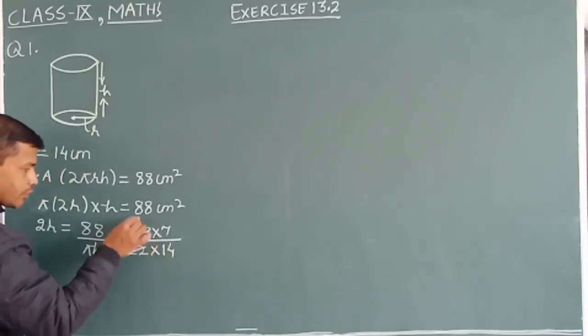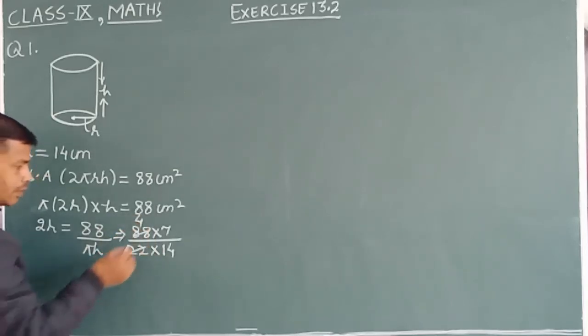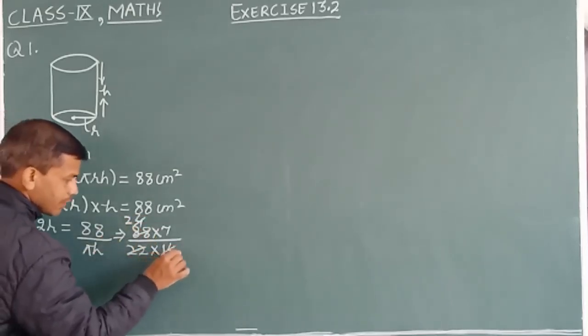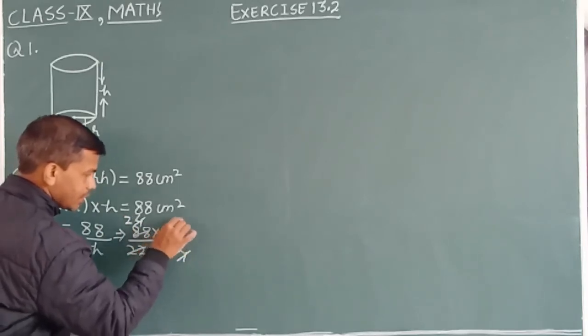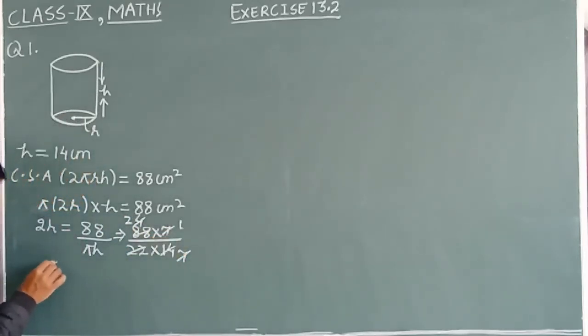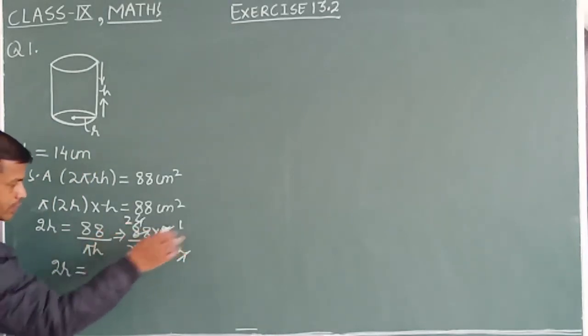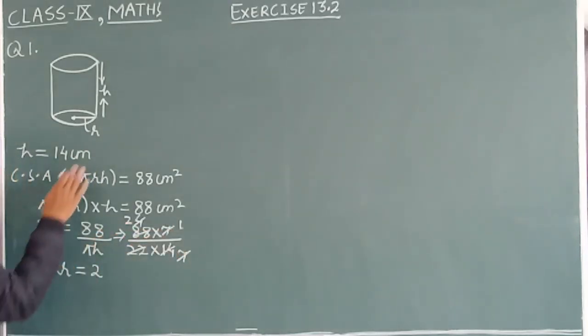So it is 22, 4s are 88 and 2 2s are 4, 2 7s are 14 and this 7 1s are 7, so that 2r is 2, 1s are 2 centimeter.